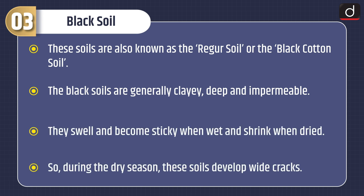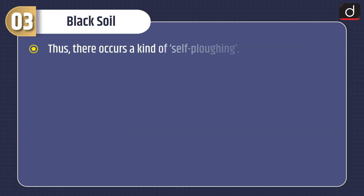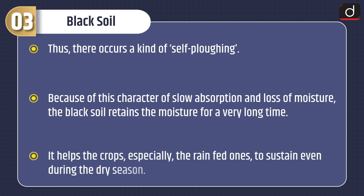The black soils are generally clayey, deep and impermeable. They swell and become sticky when wet and shrink when dried. So during the dry season, these soils develop wide cracks, and thus there occurs a kind of self-plowing. Because of this character of slow absorption and loss of moisture, the black soil retains moisture for a very long time. It helps the crops, especially the rain-fed ones, to sustain even during the dry season.